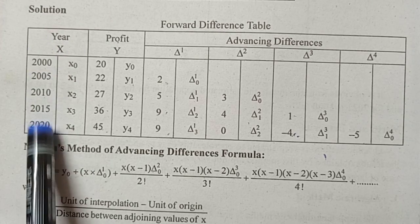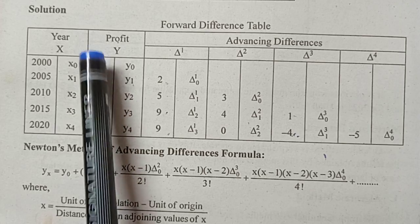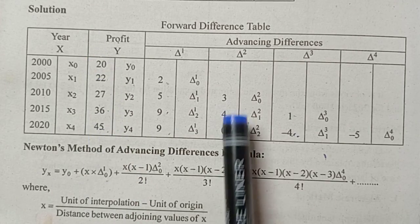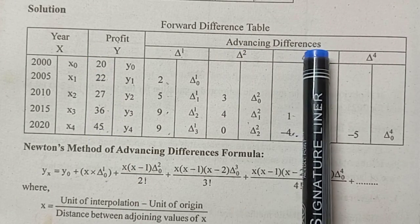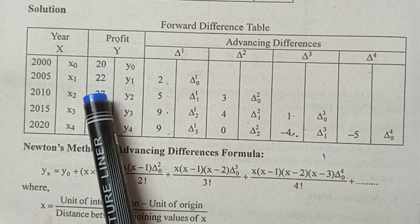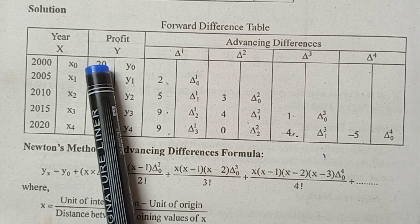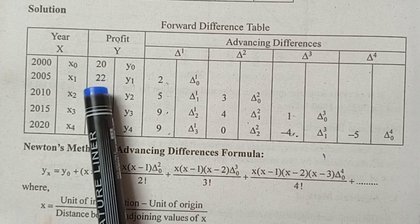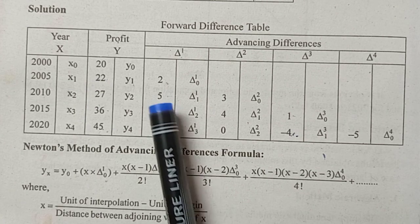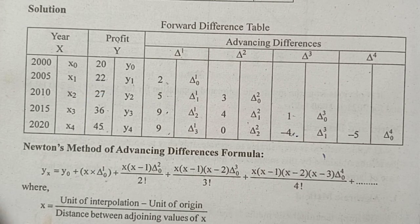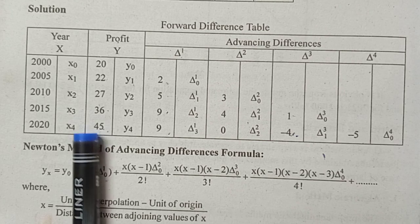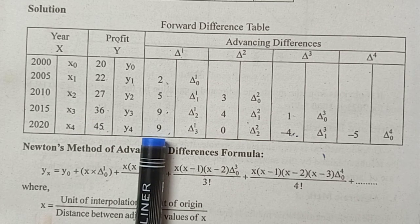Now, the years are written here and the profit is written here. After that, advancing difference. The difference is 22 minus 20, 2, 27 minus 22, that is 5, 36 minus 27, 9, 45 minus 36, 9, that is delta 1.